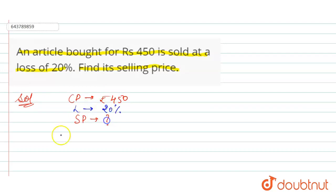So here we use the formula of SP equals 100 minus loss percent divided by 100 into CP.